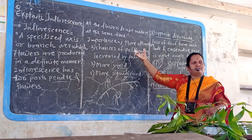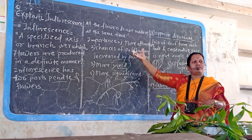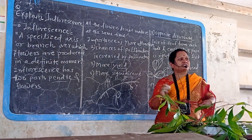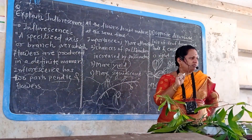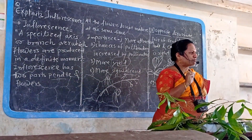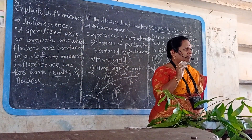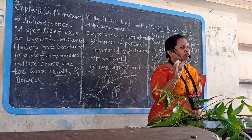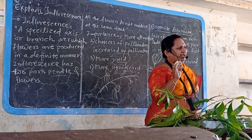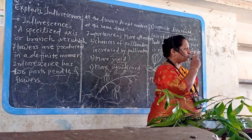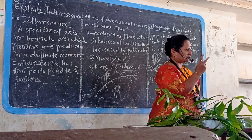This is all about inflorescence. Next time, you will study the types of inflorescence — that is racimose inflorescence and cymose inflorescence. There are two types of inflorescence.